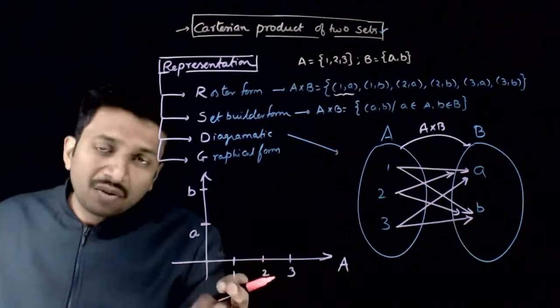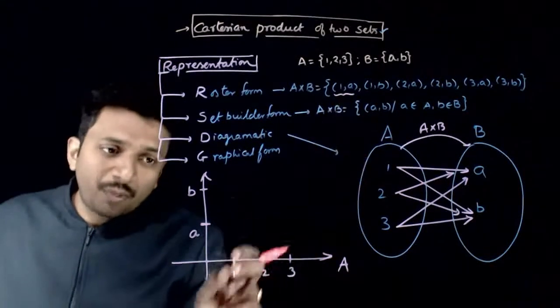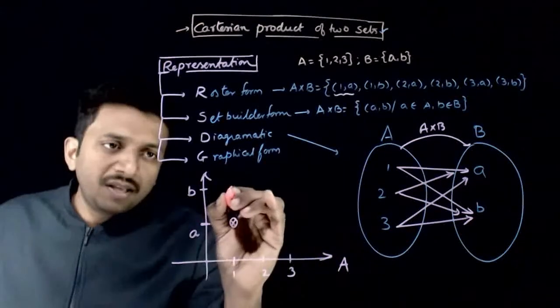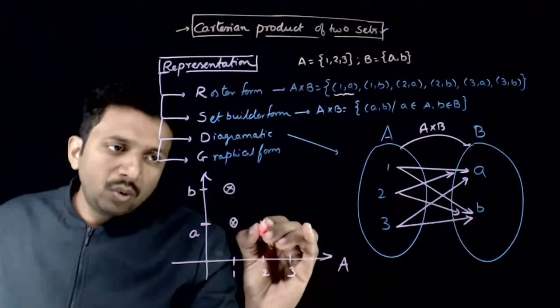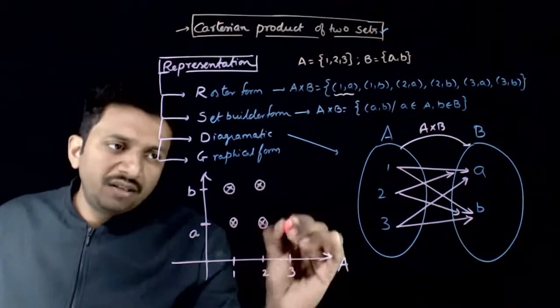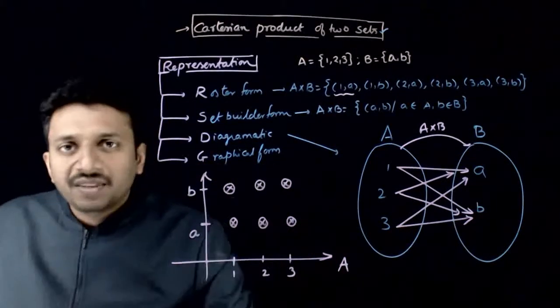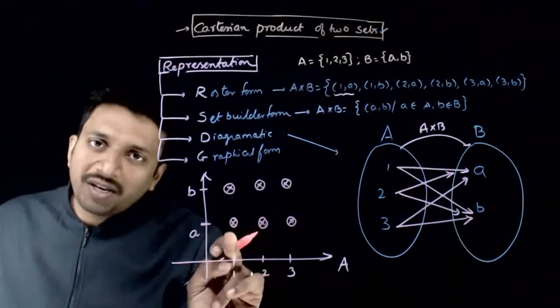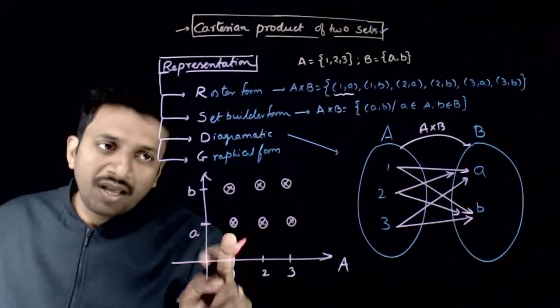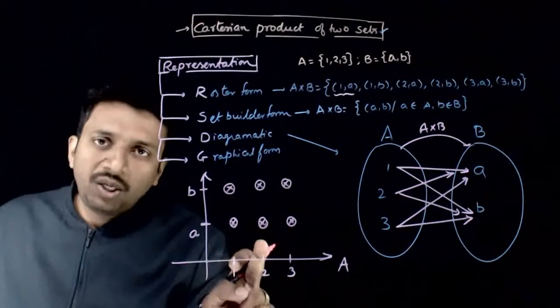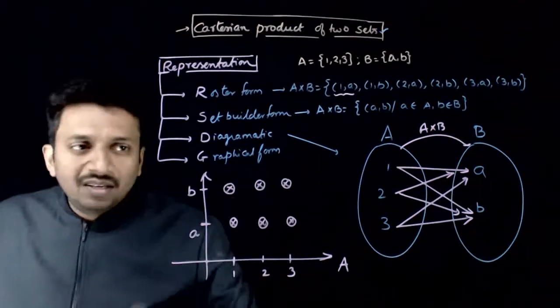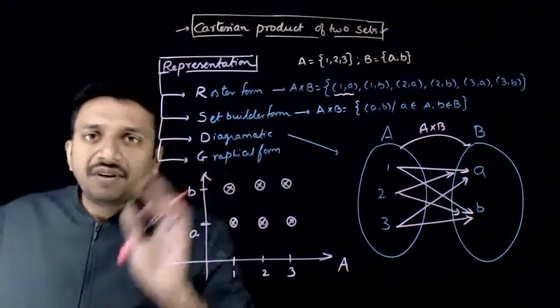So, 1A, the ordered pair 1A looks like the point 1, a, so that is this point. And 1B is this point, 2A, 2B, 3A, 3B. So, A x B contains these six points. This point is ordered pair 1A, this is ordered pair 1B, 2A, 2B, 3A, 3B. So this is called the graphical form of representation.